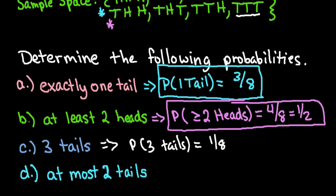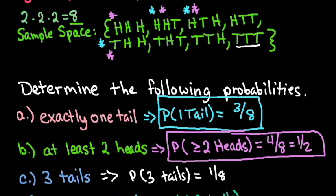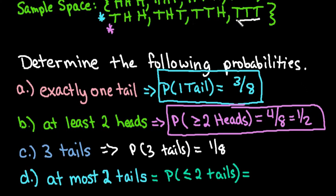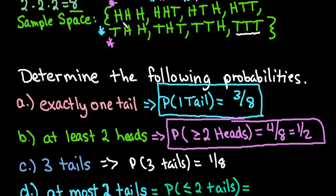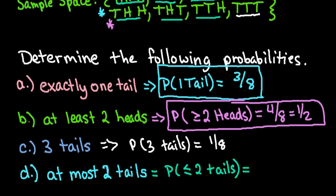At most two tails means the probability of less than or equal to two tails, which is basically the same as less than three. Only one outcome has more than two tails, so we can use the complement rule: one minus one-eighth. Or we can count all outcomes with at most two tails — zero, one, one, two, one, two, one — that's seven out of eight. Both methods give seven out of eight.